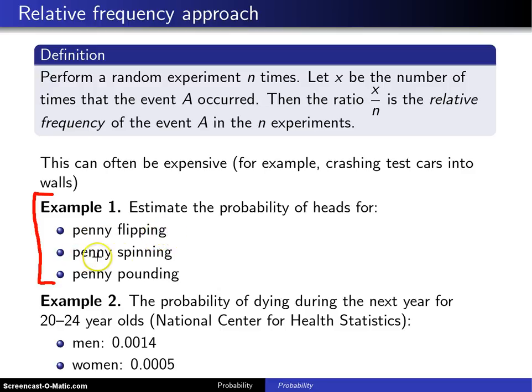There are other experiments. One of those is penny spinning, where you set the penny on edge, hold it on top with one finger, and flick it with a finger from the opposite hand. Eventually the penny will stop spinning and fall either heads or tails, and that might give a slightly different answer than the penny flipping experiment.